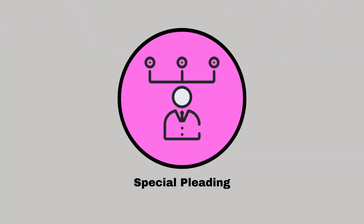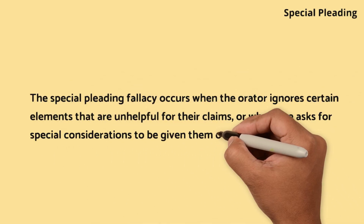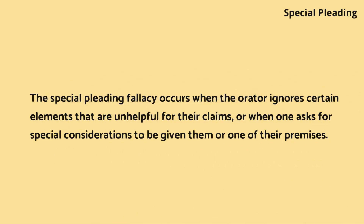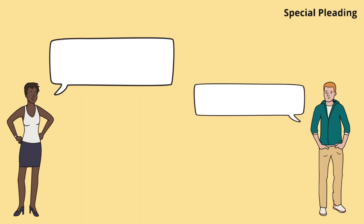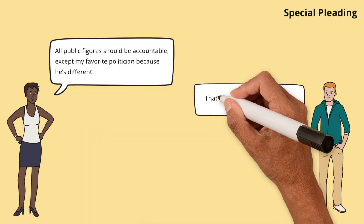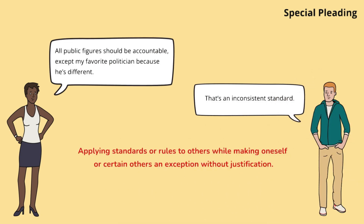Special pleading. The special pleading fallacy occurs when the orator ignores certain elements that are unhelpful for their claims, or when one asks for special considerations to be given to them or one of their premises. Ava applies a standard to others but exempts someone special without justification. Max calls out this inconsistency, demanding fairness in application.